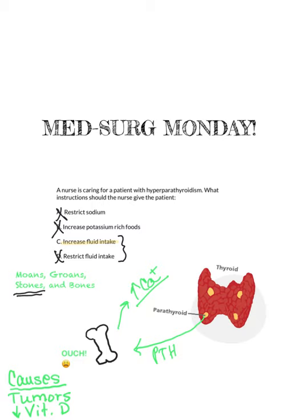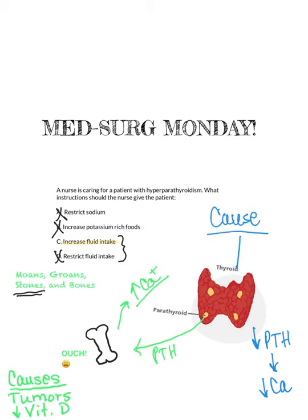Now let's talk about hypoparathyroidism. With hypoparathyroidism, we have a low parathyroid hormone, which is going to lead to a low blood calcium level. The main cause of decreased parathyroid hormone is going to be a thyroidectomy — taking out the thyroid — because if we take out the thyroid, the parathyroid hormone is going to go along with it.